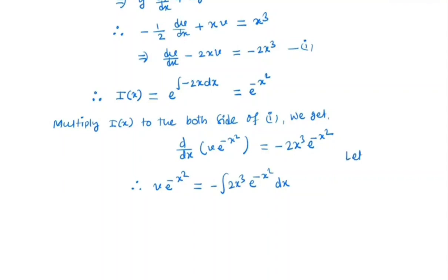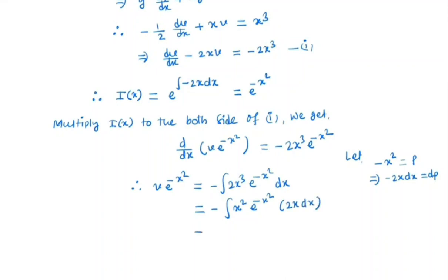So we have v · e^(minus x²) = integral of minus 2x³ · e^(minus x²) dx. Here we substitute p = minus x², so minus 2x dx = dp, x² = minus p, and e^(minus x²) = e^p. The integral becomes the integral of minus p · e^p · minus dp, which simplifies to the integral of (minus p) e^p dp, or ultimately minus the integral of p · e^p dp.